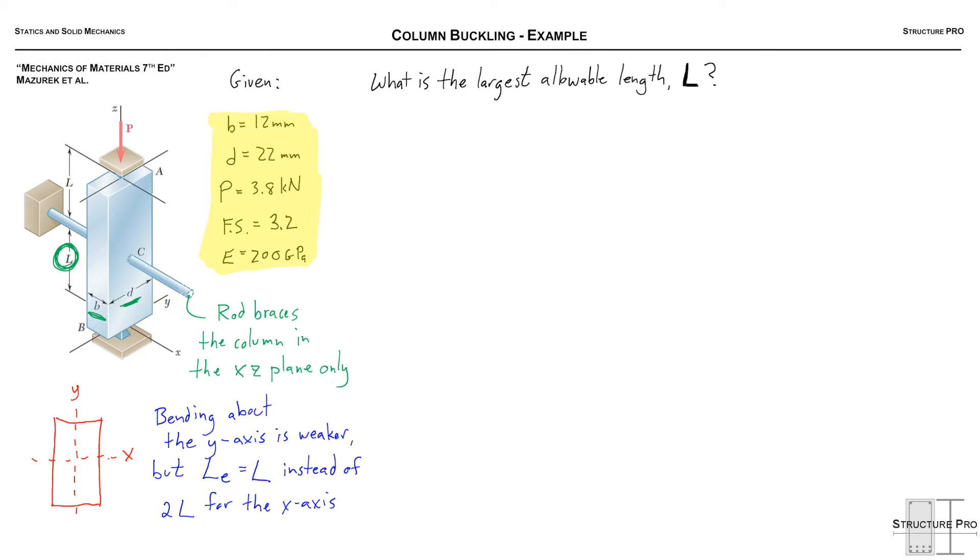So let's just draw these buckling shapes that would occur. So this is what would occur if there was no bracing. So that's not the case. So because of this bracing at C it has to buckle essentially twice.